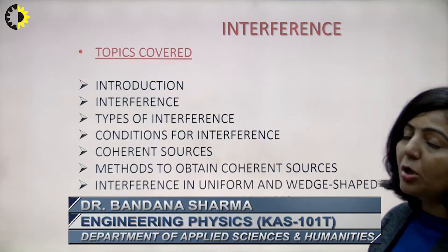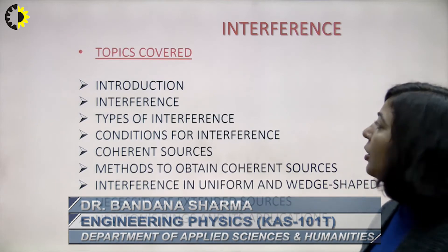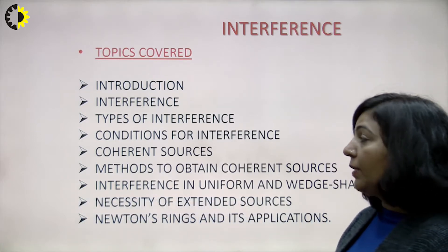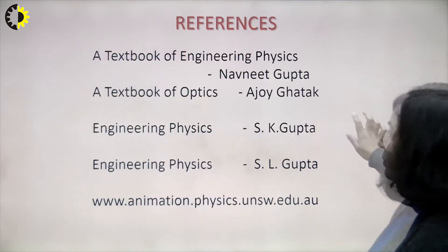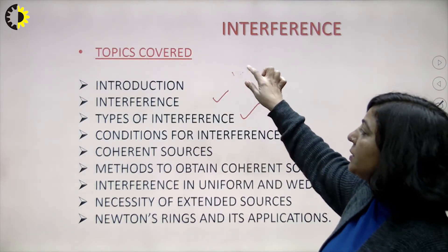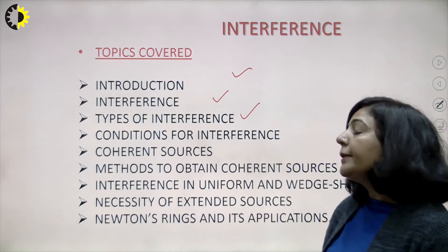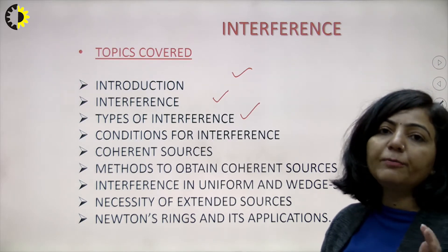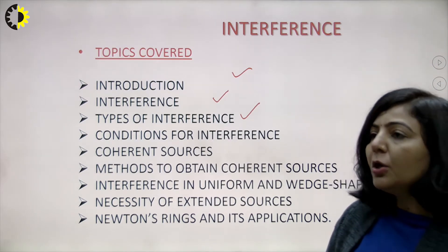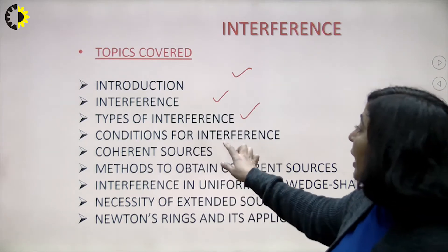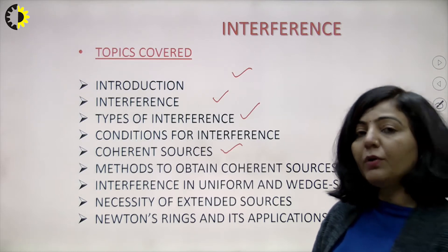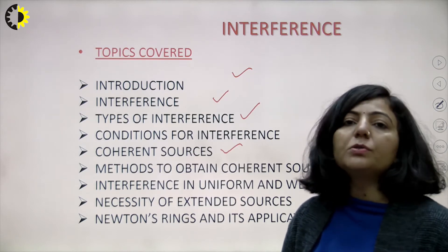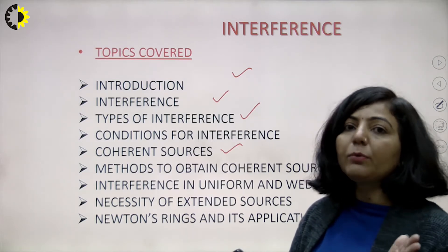The topics we are covering under interference include: the introduction to interference, types of interference, and the conditions to get interference — meaning under which conditions we can get a sustained interference pattern. We have discussed coherent sources, and the fact that two independent sources can never be coherent. So if you want coherent sources, using a single source you have to generate two sources.